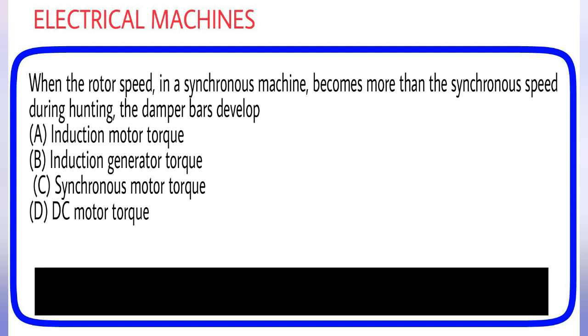When the rotor speed in a synchronous machine becomes more than the synchronous speed during hunting, the damper bars develop: (A) Induction motor torque, (B) Induction generator torque, (C) Synchronous motor torque, (D) DC motor torque. Answer is option B.